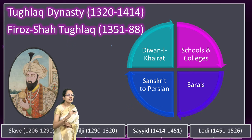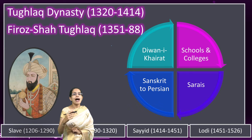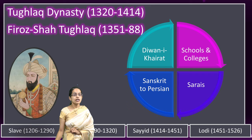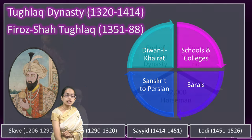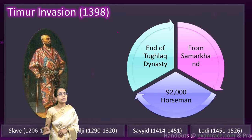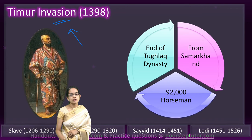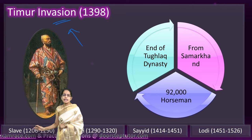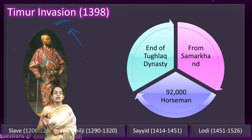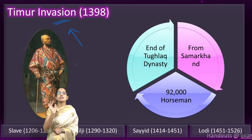After Tughlaq, the successors of the Tughlaq dynasty were very weak, and therefore the invasion of Timur was witnessed. Once the Tughlaq rulers became weak, Timur saw a good opportunity to invade India. His sole idea was to loot India and bring the wealth back to Samarkand to beautify its palaces and forts. Timur's invasion effectively led to the end of the Tughlaq dynasty.